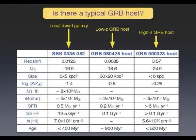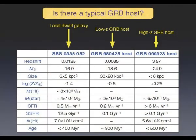Comparing those three galaxies — the local dwarf galaxy, the low-redshift GRB host, and the high-redshift one — you see that these three objects have nothing in common: not the stellar mass, not the star formation rate, not the metallicity. So we don't have a typical host galaxy. The only thing we know is that the host galaxy has to be star-forming — we're talking about long gamma-ray bursts.